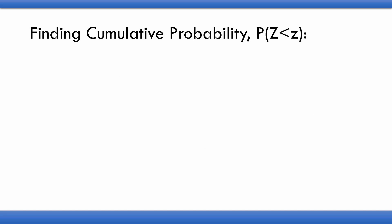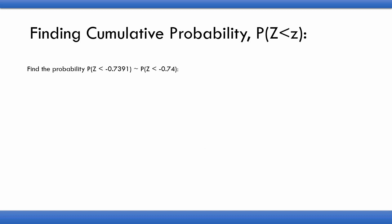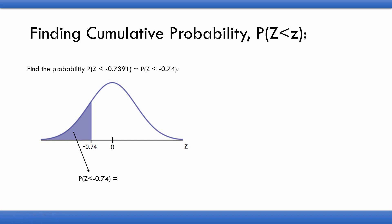Coming to the second step, we now need to find the cumulative probability P(Z < z). In our previous example we got the Z-value as minus 0.7391, which we approximate as minus 0.74. We need to find the probability of Z less than minus 0.74, considering the standard normal distribution which has mean 0 and standard deviation 1.